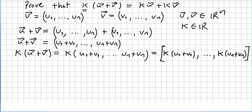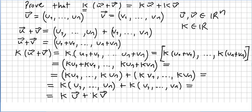What is k times (u plus v)? Since u plus v is the vector (u1+v1, ..., un+vn), the scalar k multiplies each component: k times (u+v) equals (k(u1+v1), k(u2+v2), ..., k(un+vn)). Since k, u1, and v1 are all real numbers, by the distributive property of real numbers, k(u1+v1) equals k·u1 plus k·v1, and so on through k·un plus k·vn.